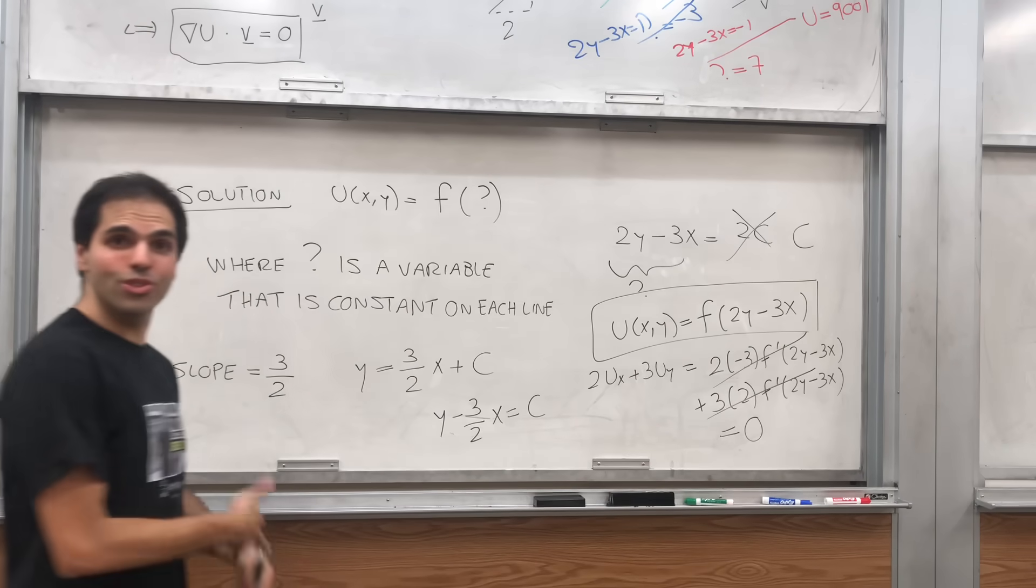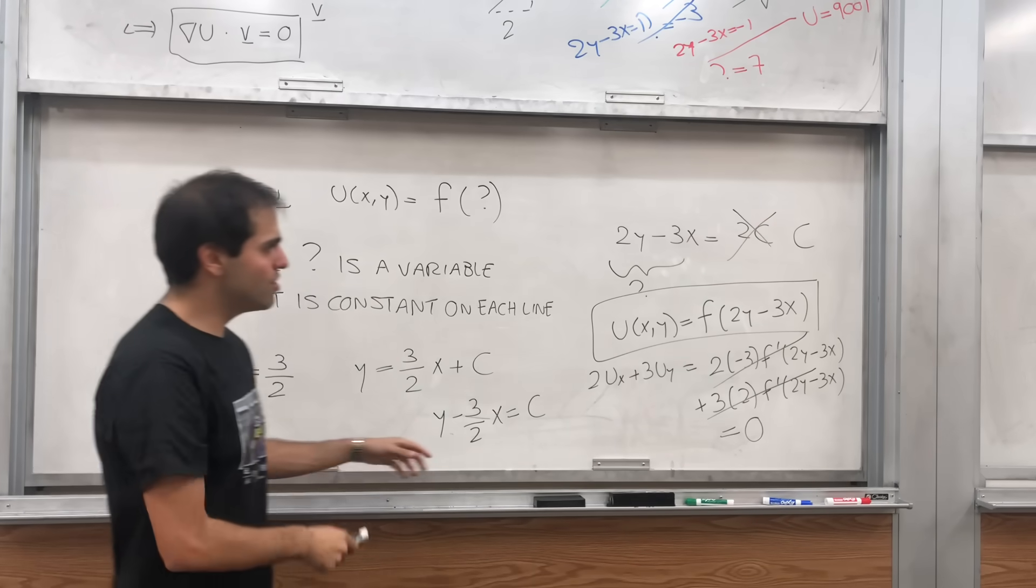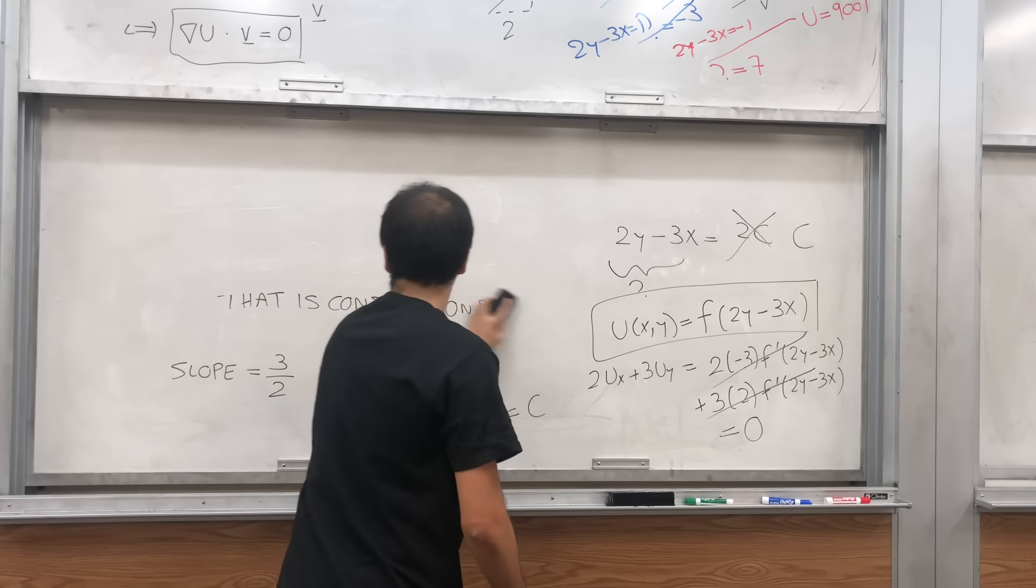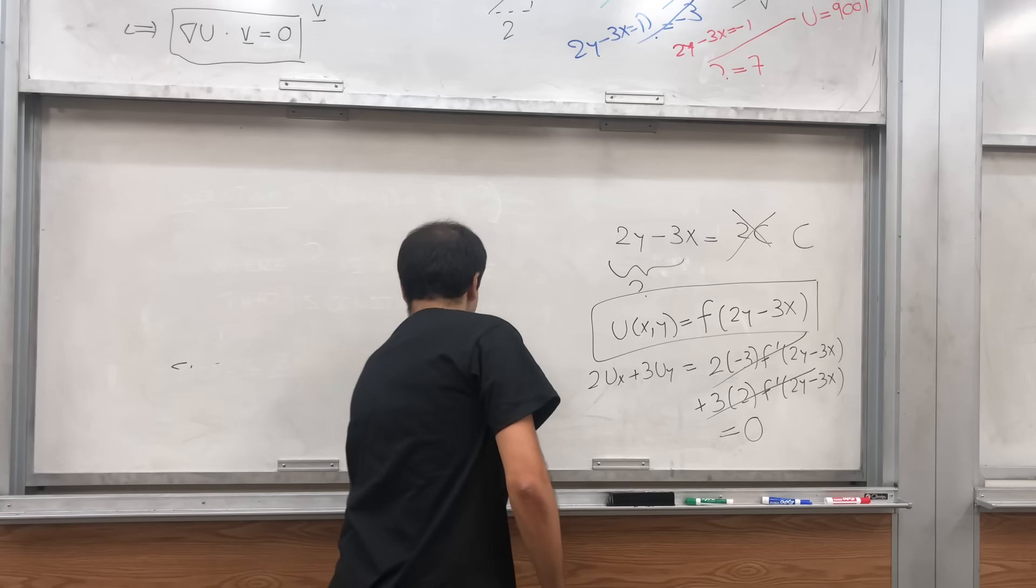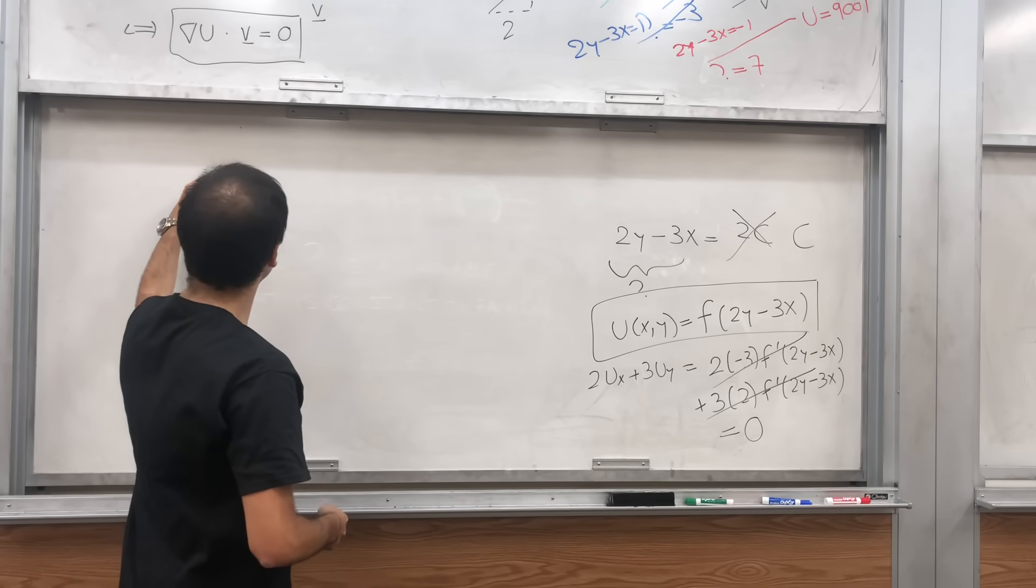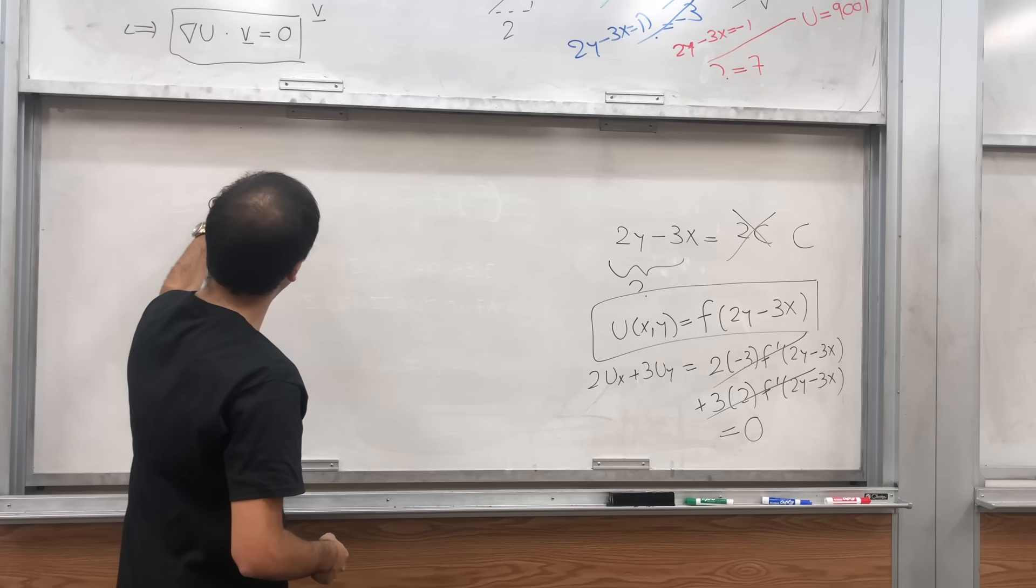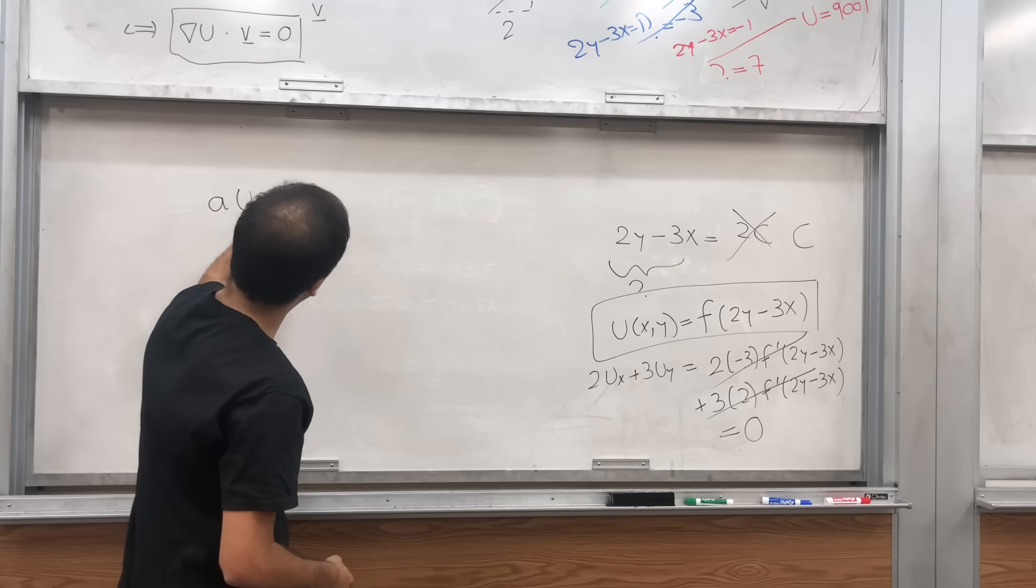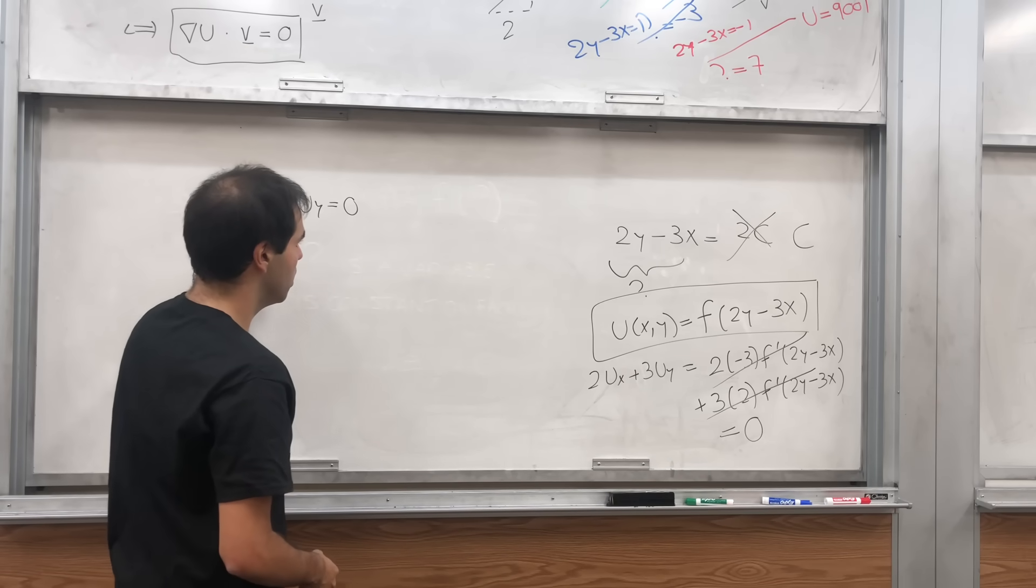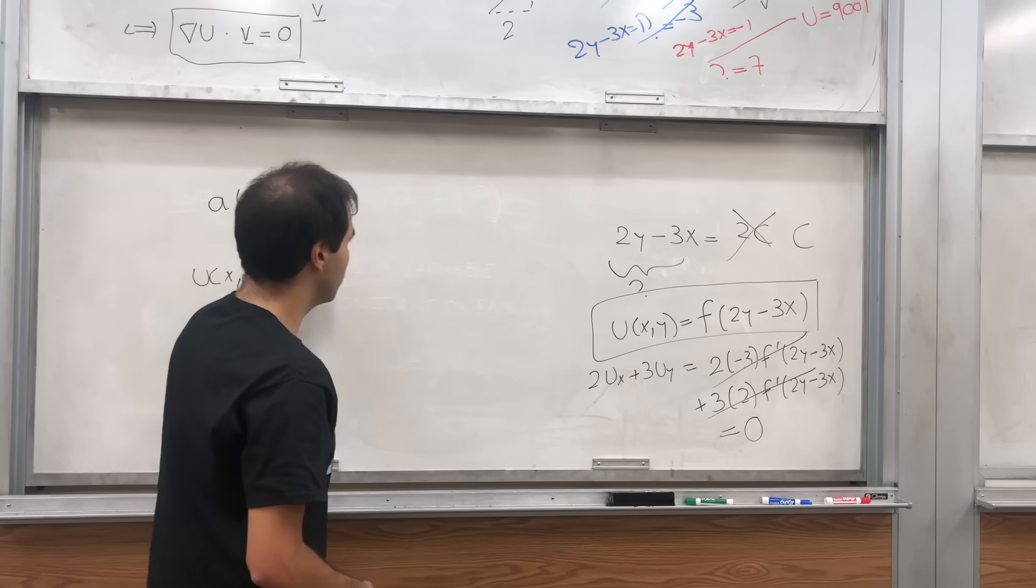And lastly, just two quick remarks. First of all, how do you remember this? By the way, I forgot to say. But in general, the solution of aux + buy equals zero, then becomes u(x,y) equals f of, again, 2 is just a, ay minus bx.